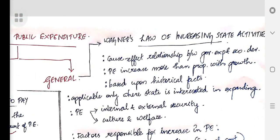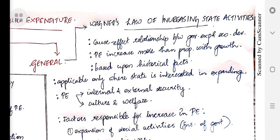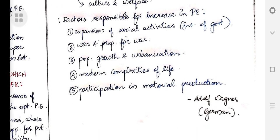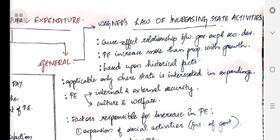Next, in general theory, we are going to talk about Wagner's law of increasing state activities, given by the German economist Adolf Wagner. Wagner says there is a cause-effect relationship between government expenditure and economic development — public expenditure increases more than proportionately with economic growth. His theory is based on historical facts and is applicable only where the state is interested in expanding its activities. He divided public expenditure into two heads: internal and external security, and culture and welfare, which includes education, health, etc.